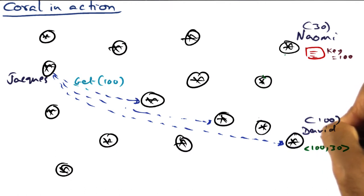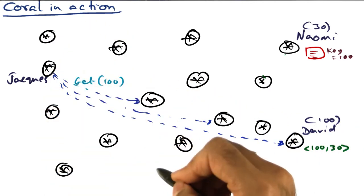And David says, yes, I do have the key value pair 130. And here is the value that you're looking for associated with the key that you're asking about, and the value is 30, indicating that 30 is the node that has the content that corresponds to this key 100. That's what Jacques is going to get back.